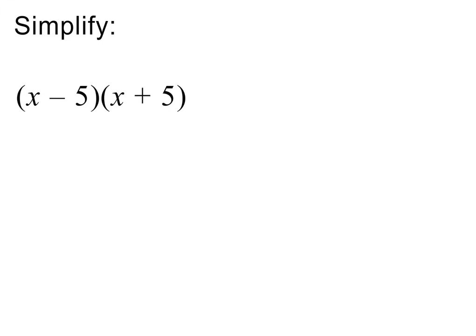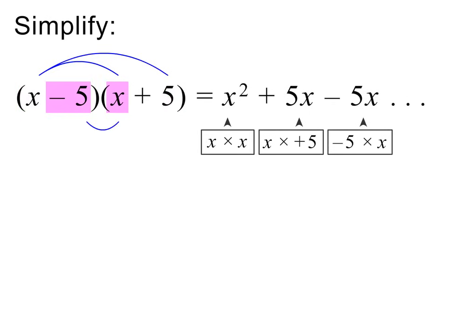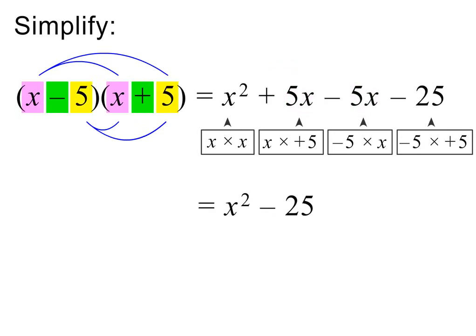In the next example we have two identical brackets with opposite signs. We again use FOIL. x times x equals x squared. Next we multiply the outer terms: x times plus 5 equals plus 5x. And then the inner terms: minus 5 times x equals minus 5x. And then the last terms: minus 5 times plus 5 equals minus 25. The like terms cancel out, so the answer is x squared minus 25 — only two terms. Please note: the answer will always have only two terms if the brackets are identical with opposite signs. Please pause to check my working.